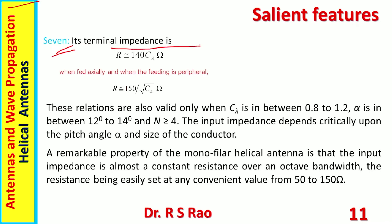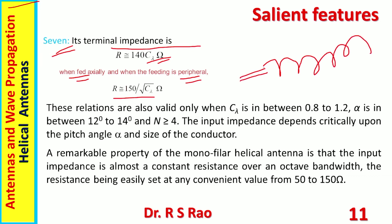Point seven: the terminal impedance is given by 140 × C/λ ohms when fed axially. When the feeding is peripheral, it is 150/√(C/λ). Axial feeding means feeding at the end of the coil axis; peripheral feeding means feeding somewhere along the side of the coil. Impedance changes with type of feeding. These relations are also valid only when C/λ is between 0.8 and 1.2, alpha is between 12 and 14 degrees, and N is greater than or equal to 4.